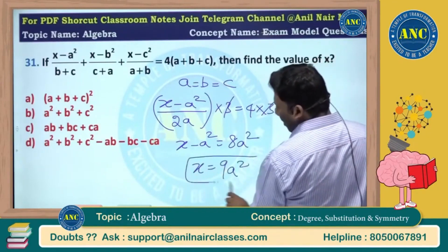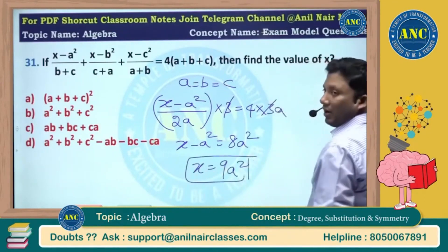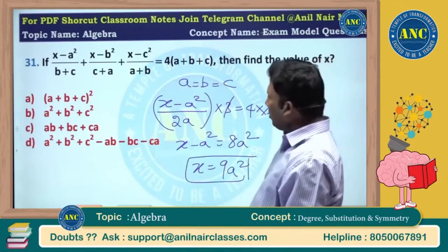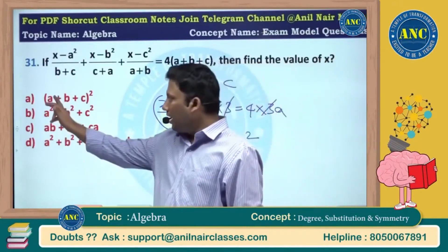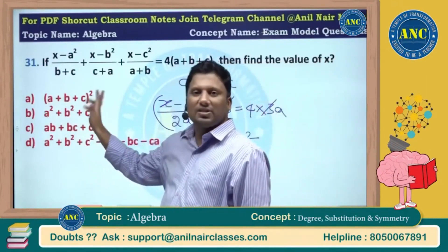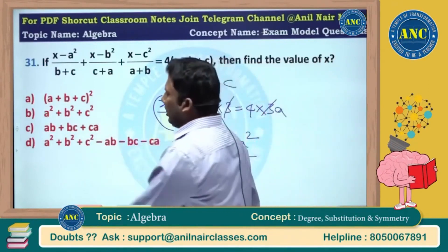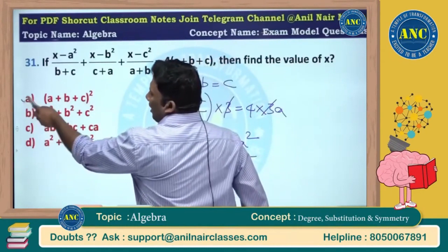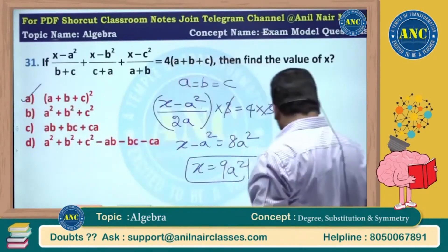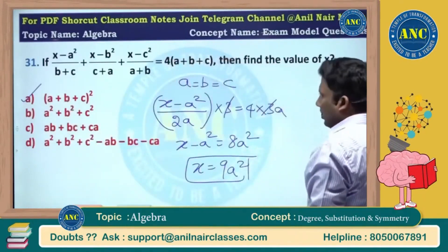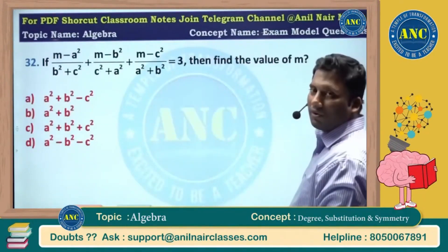Make a equivalent to b equivalent to c — you should get 9a square. Then a plus a plus a is 3a whole square, so the answer is 9a whole square.